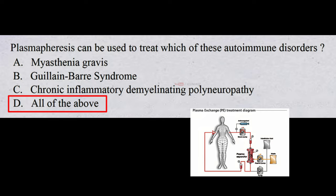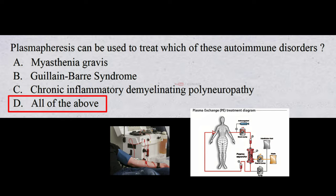Plasmapheresis is a process in which the liquid part of the blood, or plasma, is separated from the blood cells. Typically, the plasma is replaced with another solution such as saline or albumin, or the plasma is treated and then returned to the body. If a patient is having an autoimmune disease, their plasma can contain antibodies that attack the immune system. A machine removes the affected plasma and replaces it with good plasma or a plasma substitute — this is known as plasma exchange, and the process is similar to kidney dialysis. Plasmapheresis can be used to treat myasthenia gravis, Guillain-Barré syndrome, and chronic inflammatory demyelinating polyneuropathy.